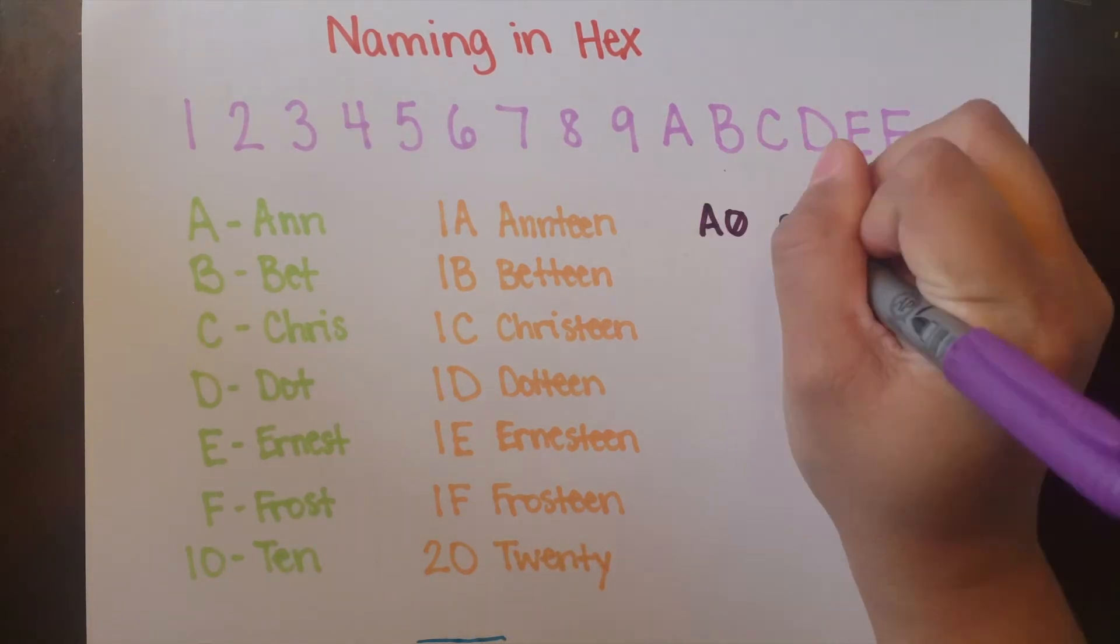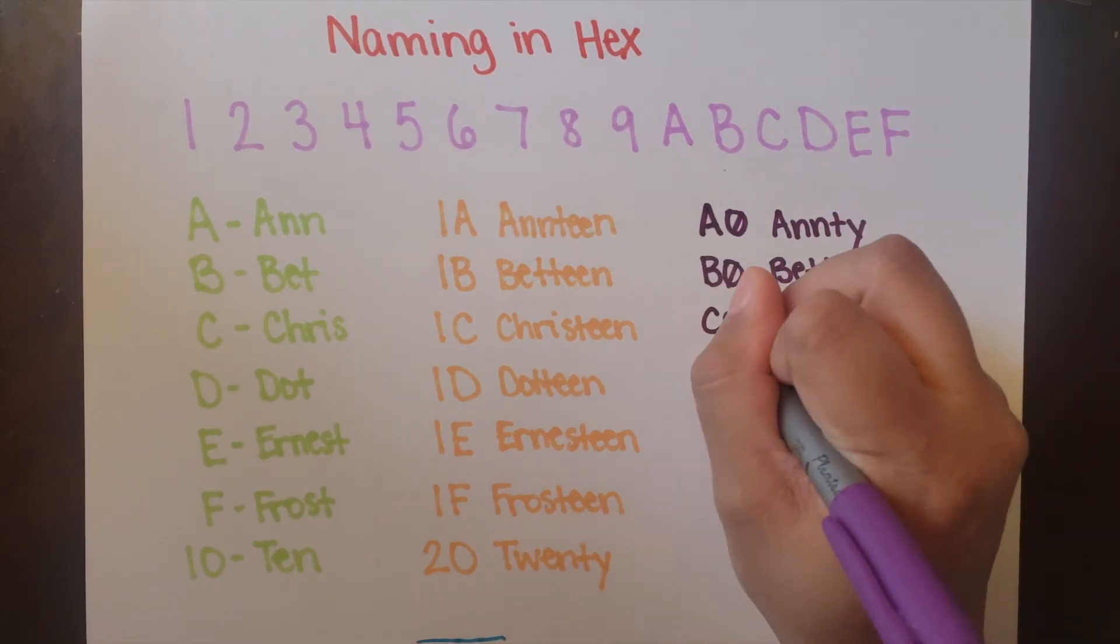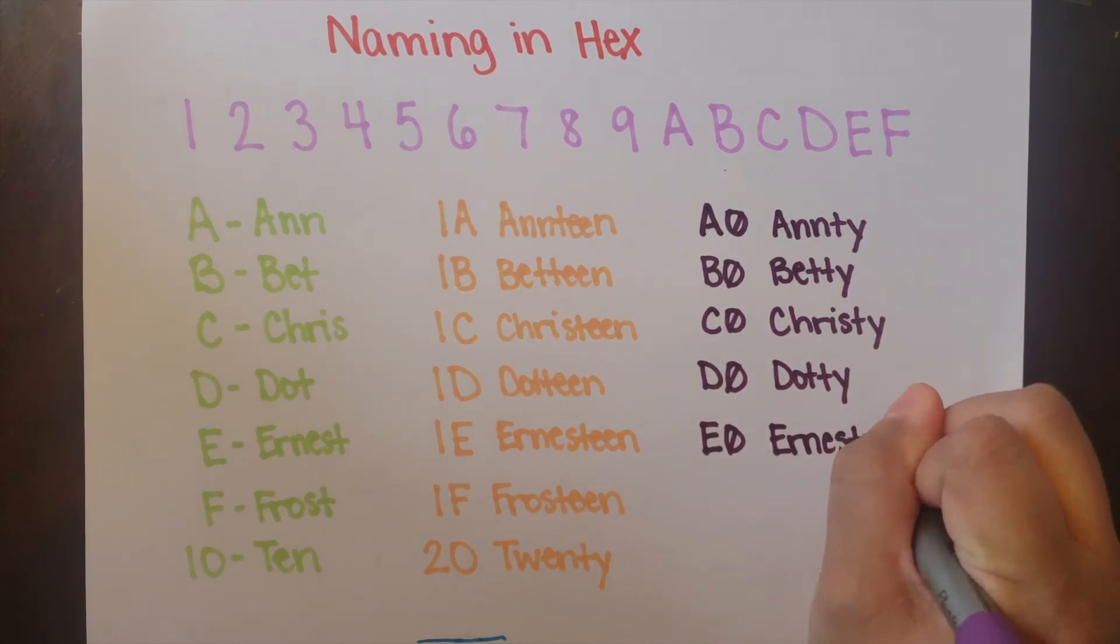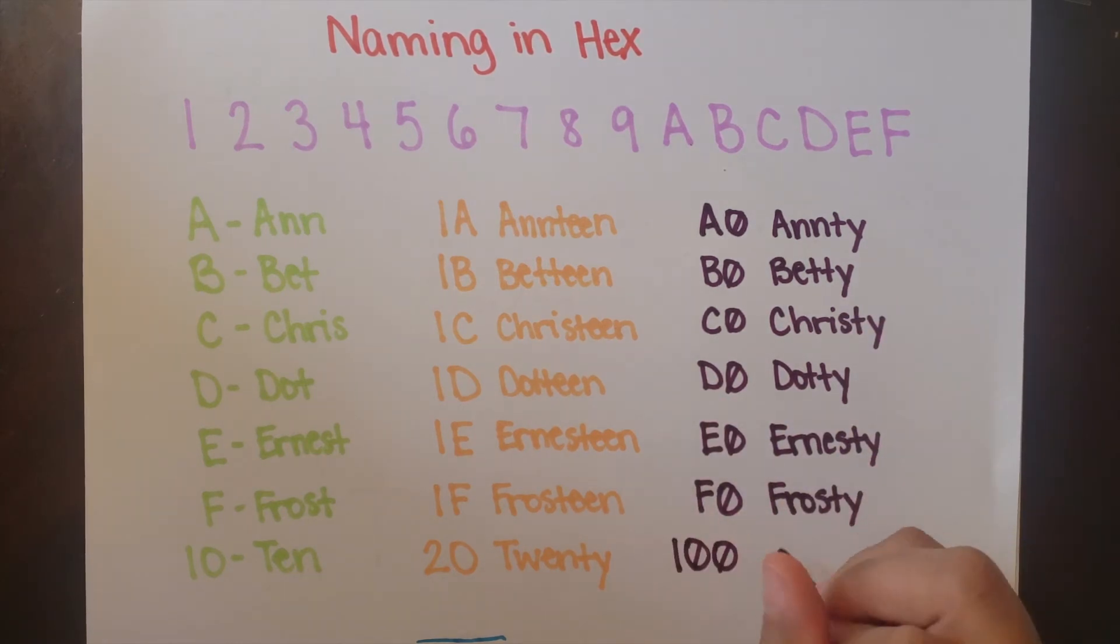Counting by tens after 90 is Ant-T, Betty, Christy, Dot-T, Ernest-T, Frosty, and then 100.